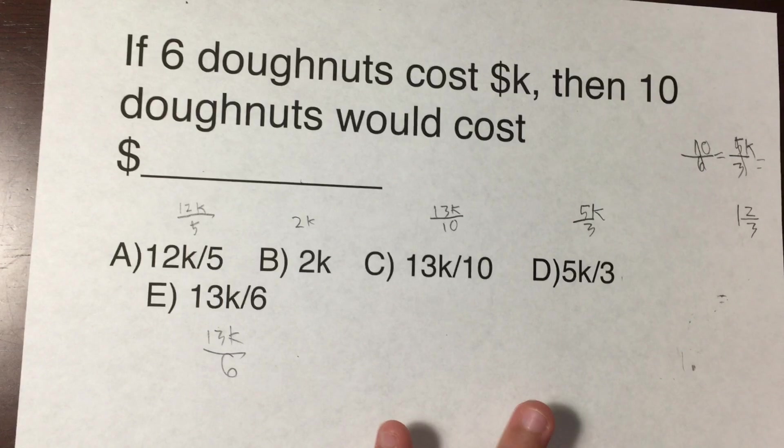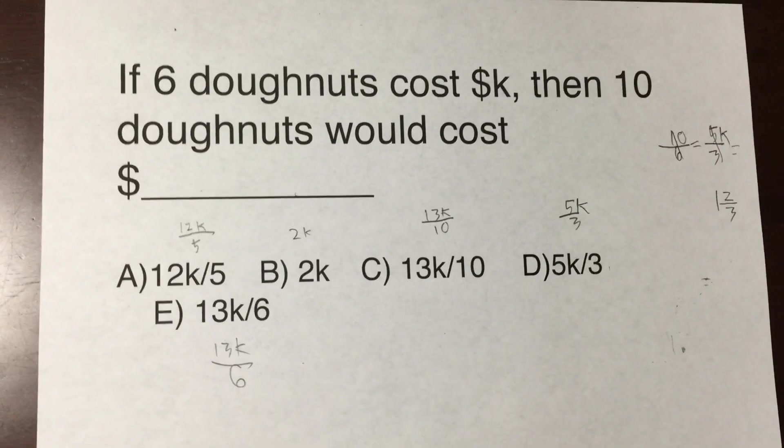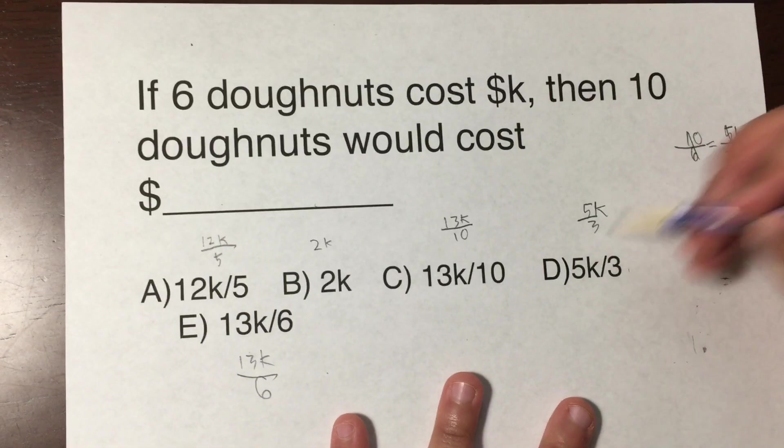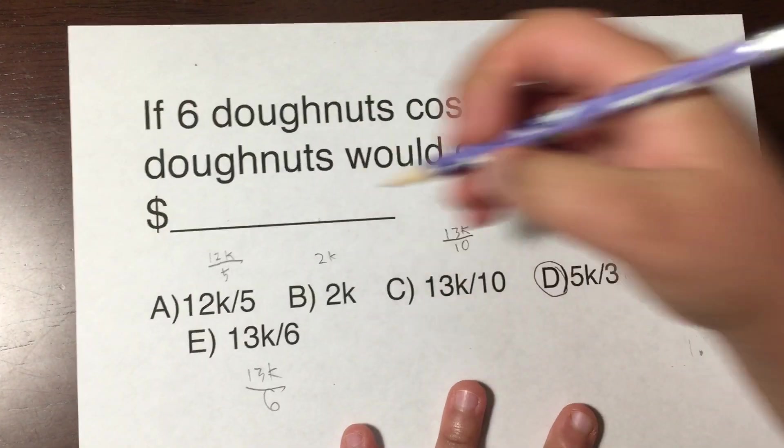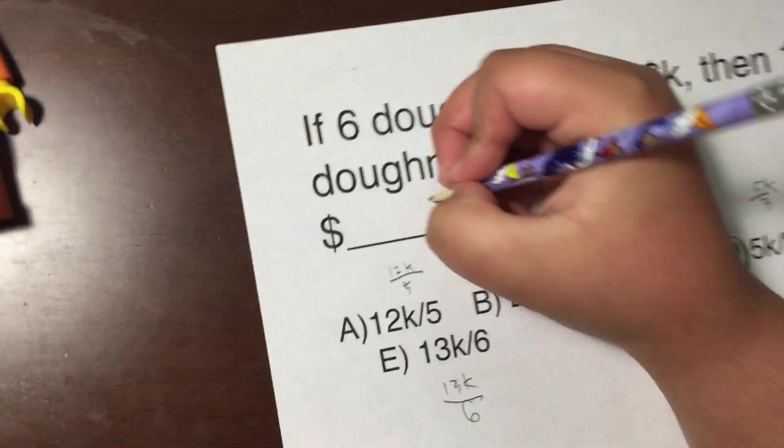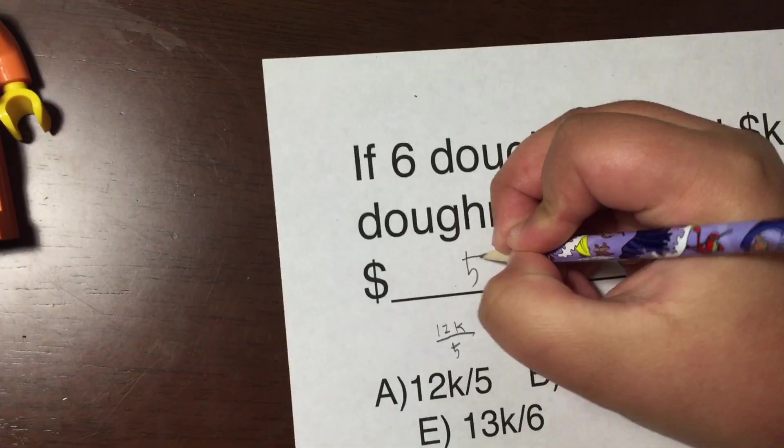So then you automatically know since it's the same, you circle your D and write five k over three.